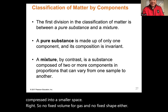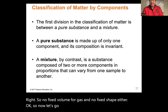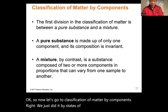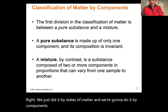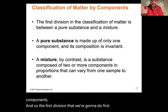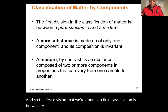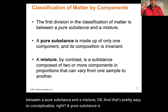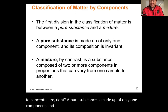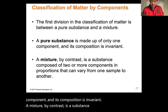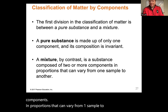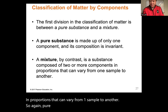Now let's classify matter by its components. The first division is between a pure substance and a mixture. A pure substance is made up of only one component and its composition is invariant. A mixture, by contrast, is composed of two or more components in proportions that can vary from one sample to another.